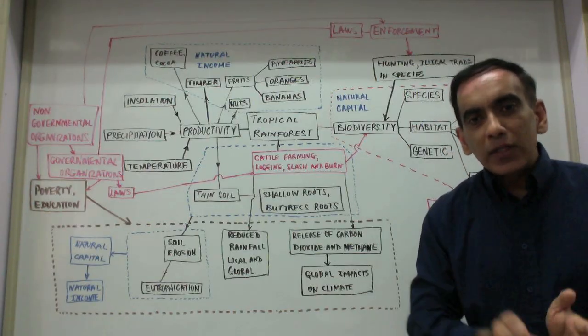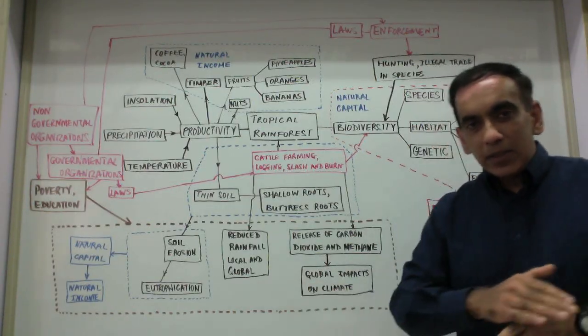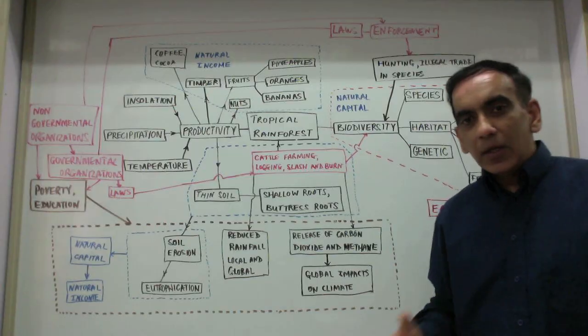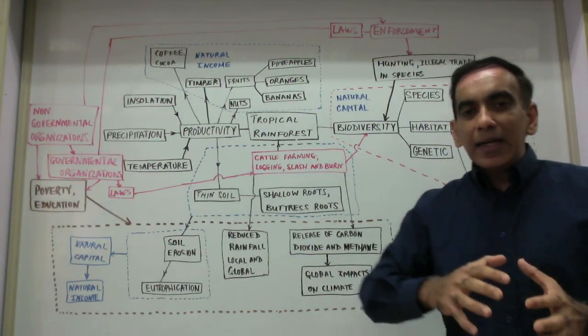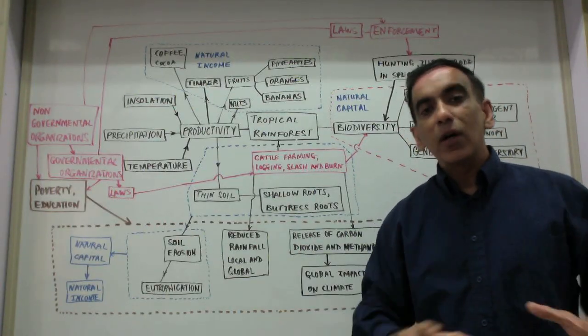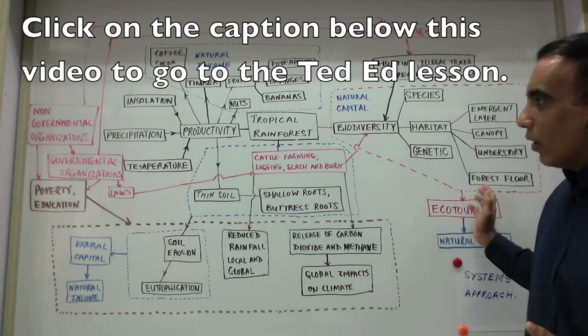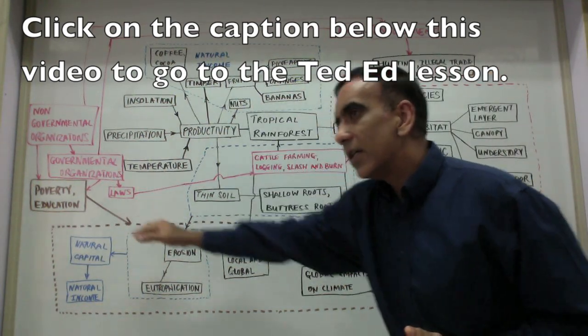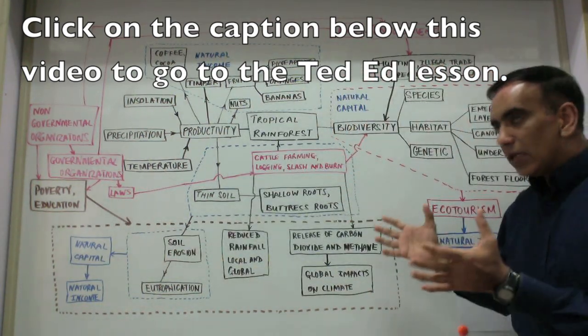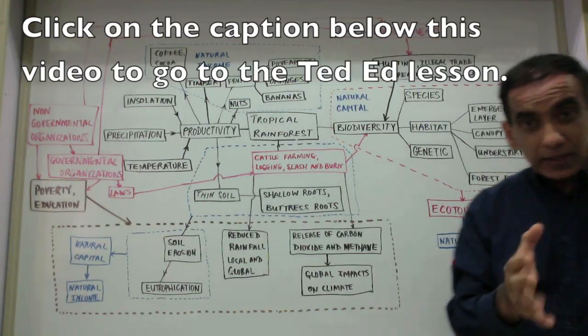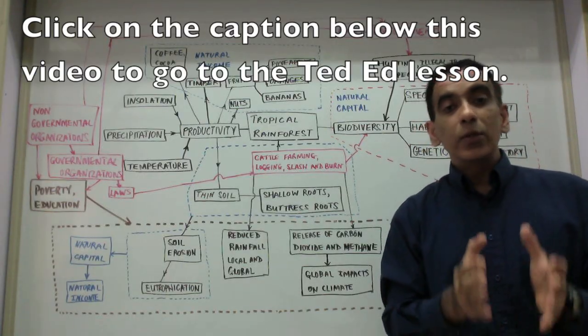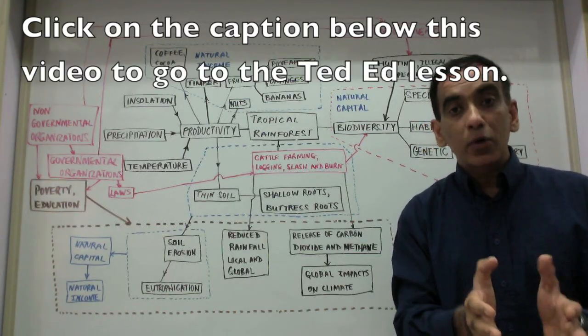So what this diagram shows you is that environmental systems and societies is not to be studied as one topic at a time, but upon studying all topics, one must be able to make a series of connections among all topics. And here you can see all of your seven topics in the syllabus being connected. And when you look at the video and you do the questions, you will have the chance to make some more connections.